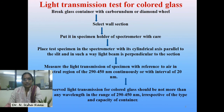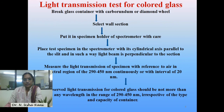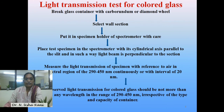For the light transmission test for colored glass, break the container with a carborundum or diamond wheel and select a wall section. Place it into a spectrophotometer such that the light beam passes perpendicularly through the wall section. Measure the transmittance of light in the spectral region of 290 to 450 nanometres at intervals of 20 nanometres. The transmission must not exceed 10 percent at any wavelength in the range of 290 to 450 nanometres, irrespective of the type and capacity of the container.